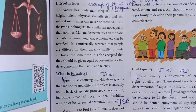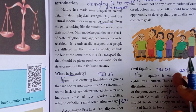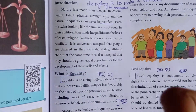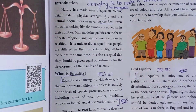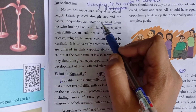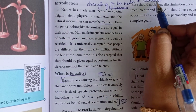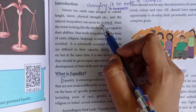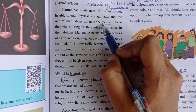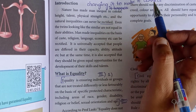Everyone in this world is not equal. Everybody is different in their own way. The natural inequalities can never be rectified. 'Rectified' means changing it to make it correct.